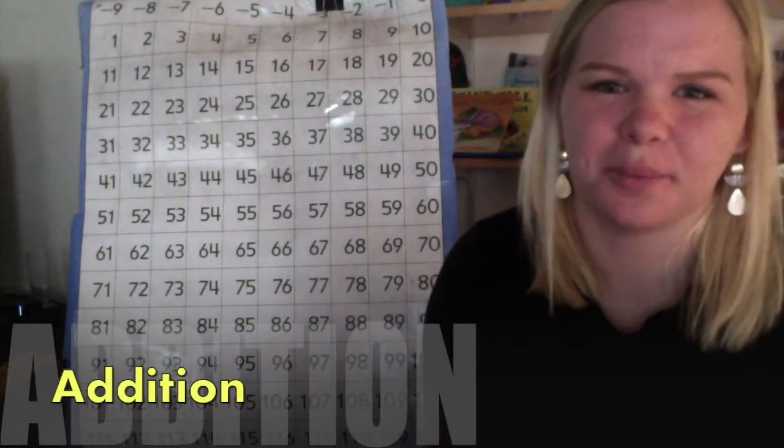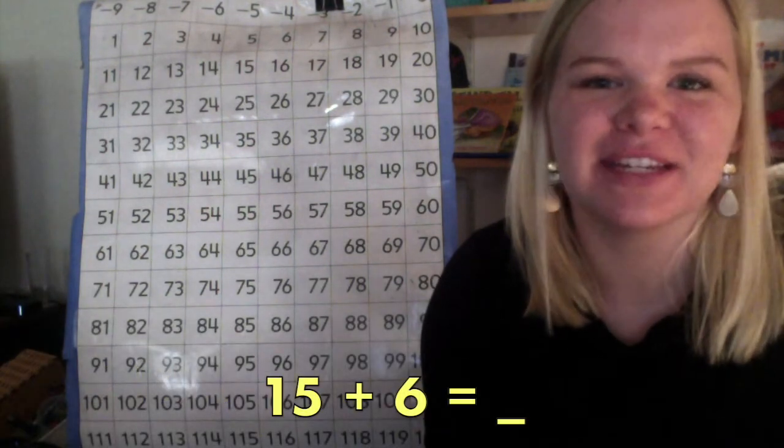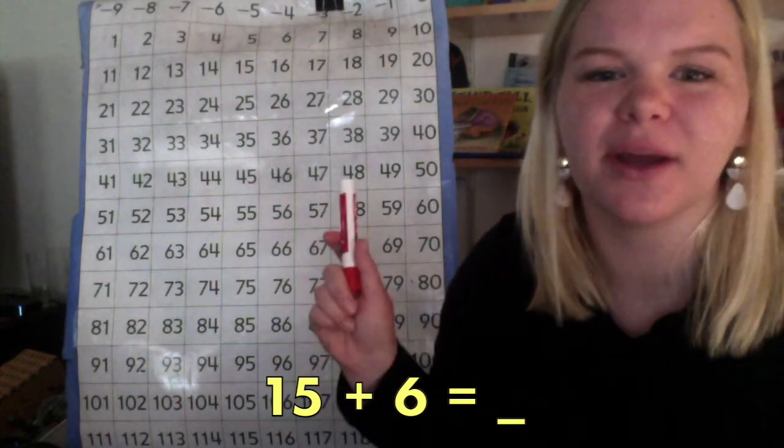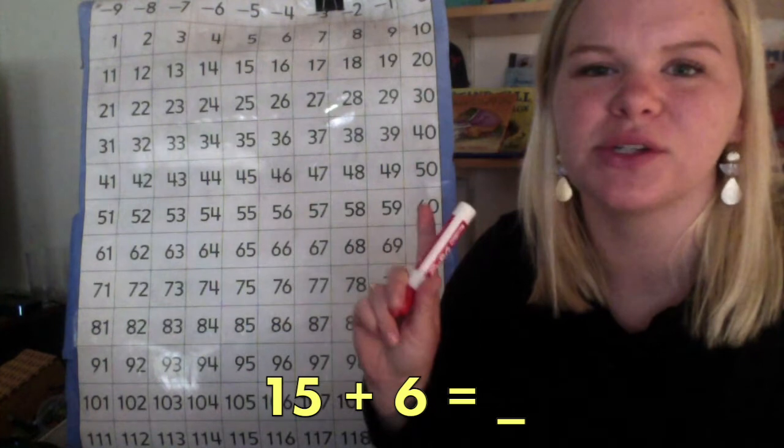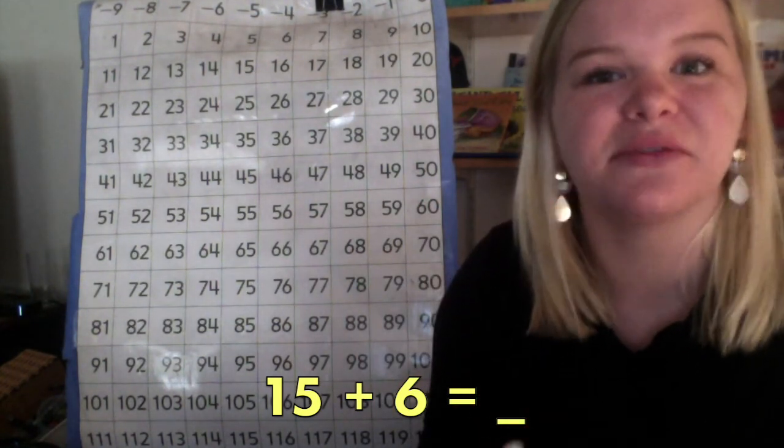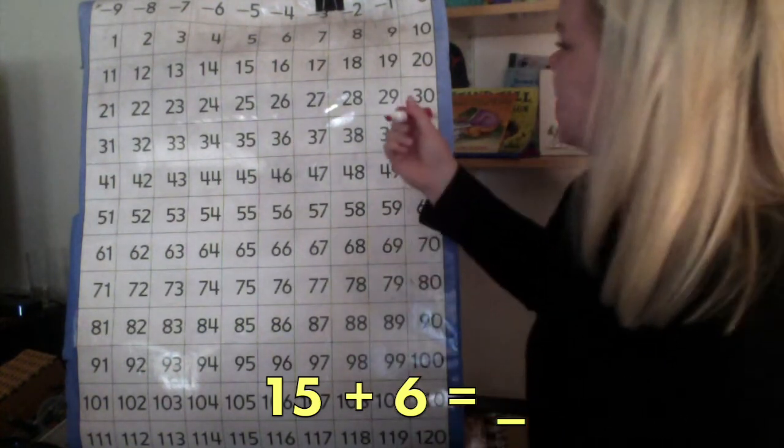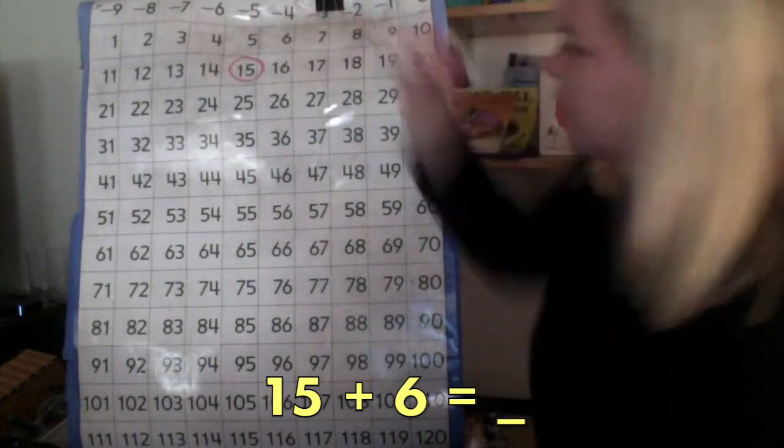Let's start off with an addition problem. The first problem we're going to solve is 15 plus 6. So, when using our number grid to solve this problem, we need to figure out first where we begin. The first number in our number sentence is 15, so that's where we're going to start. I find the number 15, circle it right there.